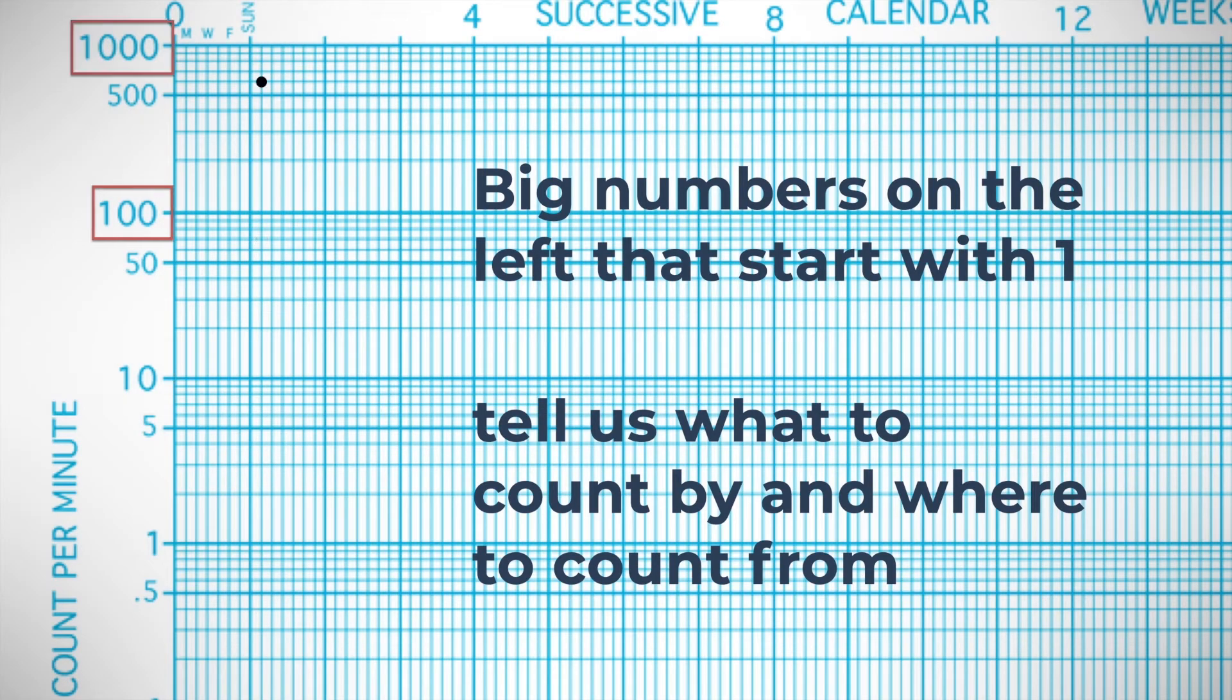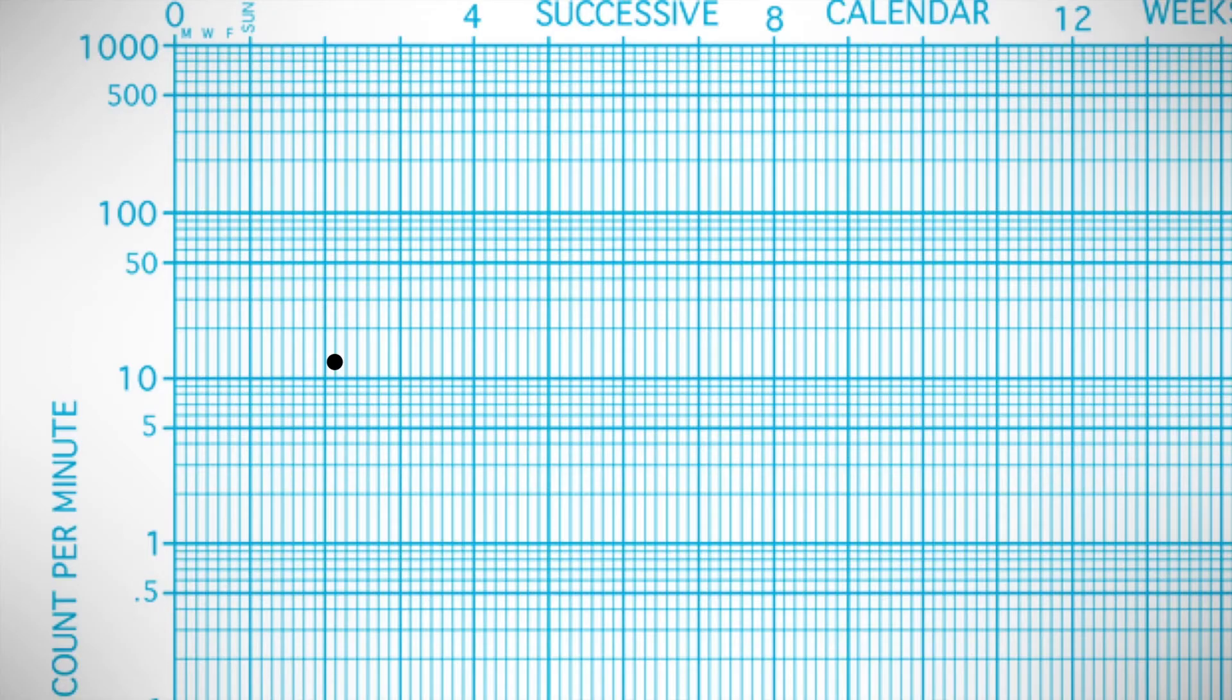Here's another example. We know we're counting by hundreds right now, and we're right above the 500, so that's 600 per minute. Take a look at this one. We're counting by ones, and this one's just below the 10, so we know that that's nine per minute.